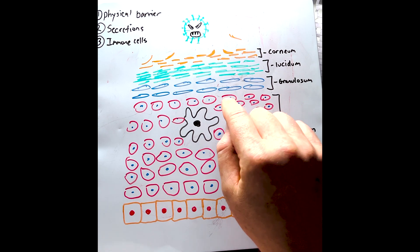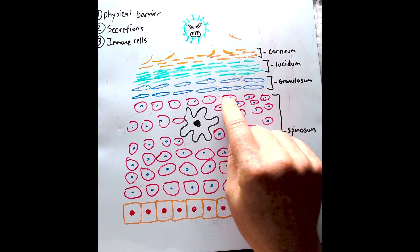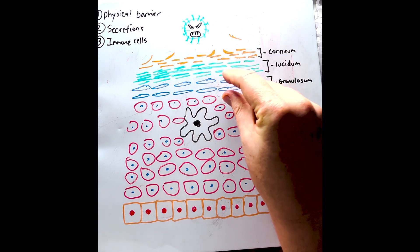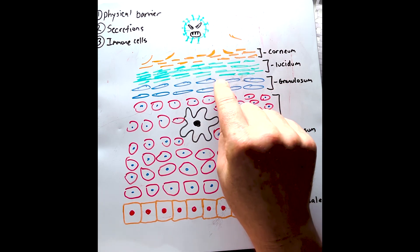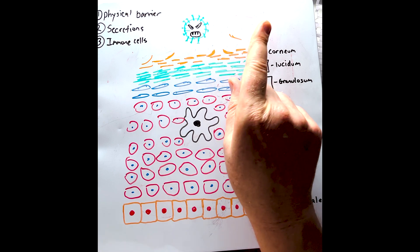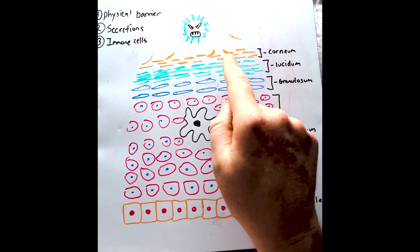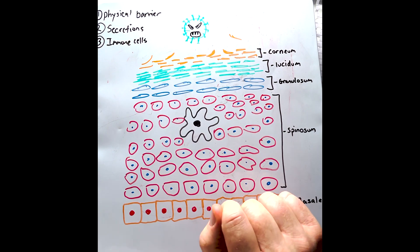As they move to the top, they undergo a process called keratinization and move into the granulosum layer, where they start to thin and die off, eventually moving up and flaking off in the corneum layer. It's in these layers that the physical barrier is most pronounced.